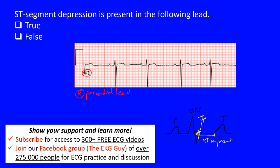Our question is looking at the ST segment and whether there is depression or not. If there's depression, we have to find that PR segment — that's what we use as our baseline. We measure this and draw a line. If the ST segment was above that line, we call it ST elevation. If it was below, we call it ST depression. We use that J point specifically to measure any ST segment elevation or depression.